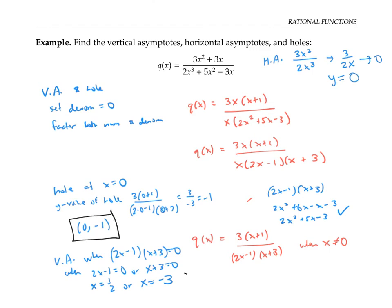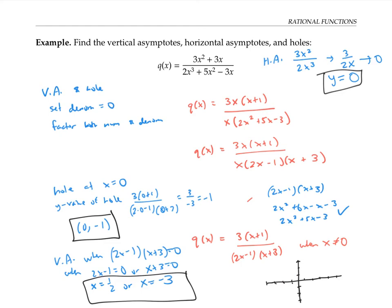So we found the major features of our graph: the hole, the vertical asymptotes, and the horizontal asymptotes. Together, this gives us a framework for what the graph of our function looks like — horizontal asymptote at y equals zero, vertical asymptotes at x equals one half and x equals minus three, and a hole at the point (zero, minus one). Plotting a few more points, or using a graphing calculator, we can see that our actual function will look something like this. Notice that the x intercept when x is negative one corresponds to where the numerator of our reduced rational function is equal to zero. That's because a zero on the numerator that doesn't make the denominator zero makes the whole function zero, and an x intercept is where the y value of the whole function is zero.